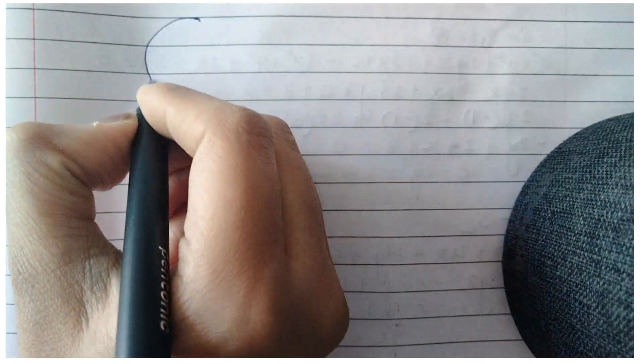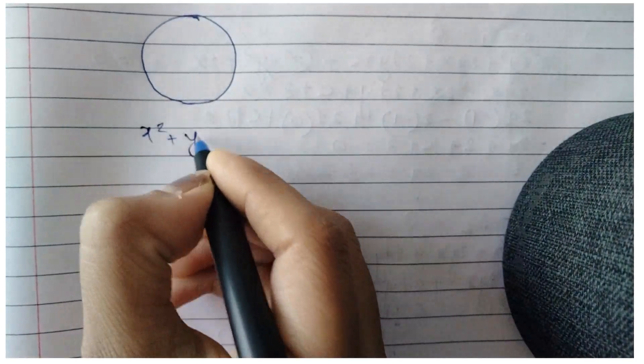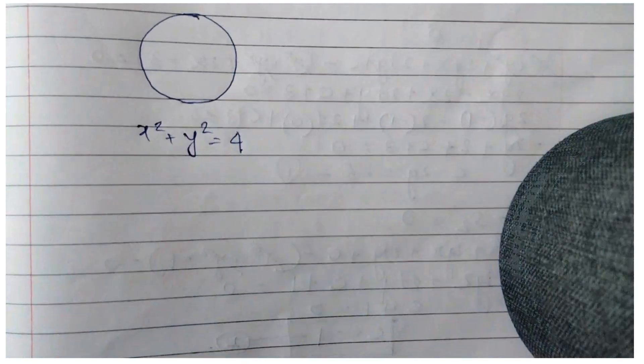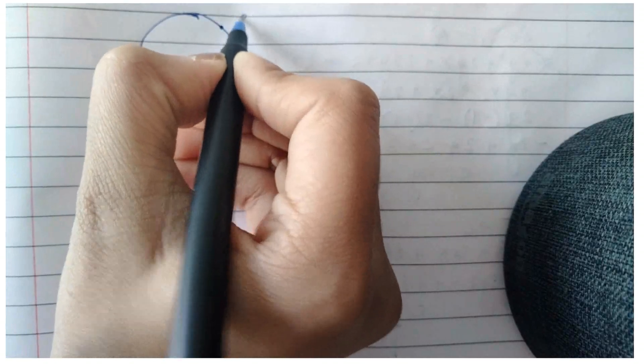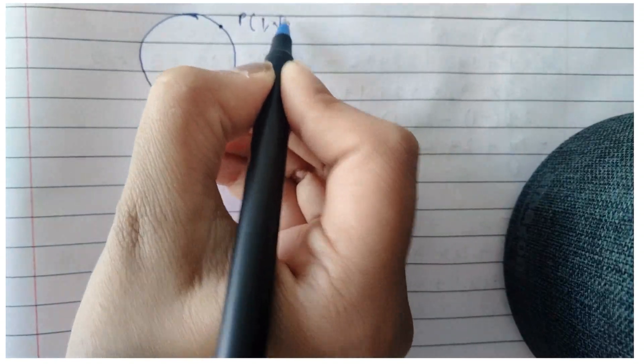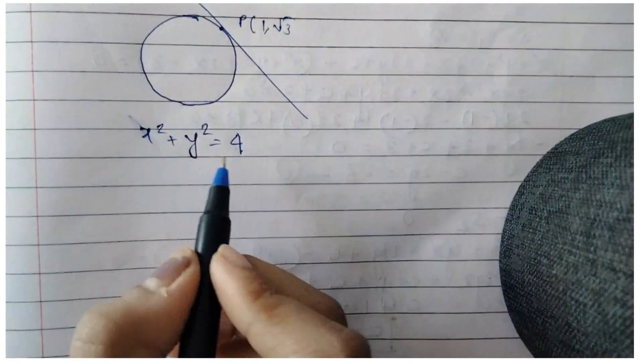It is given that there is a circle x² + y² = 4, and the tangent touches the circle at point P(1, √3). The circle follows the general formula x² + y² = r², so its center is at (0, 0).